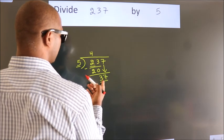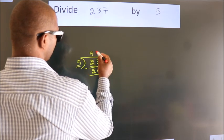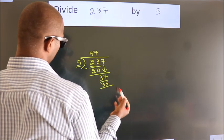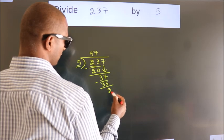A number close to 37 in the 5 table is 5 sevens, 35. Now, we subtract. We get 2.